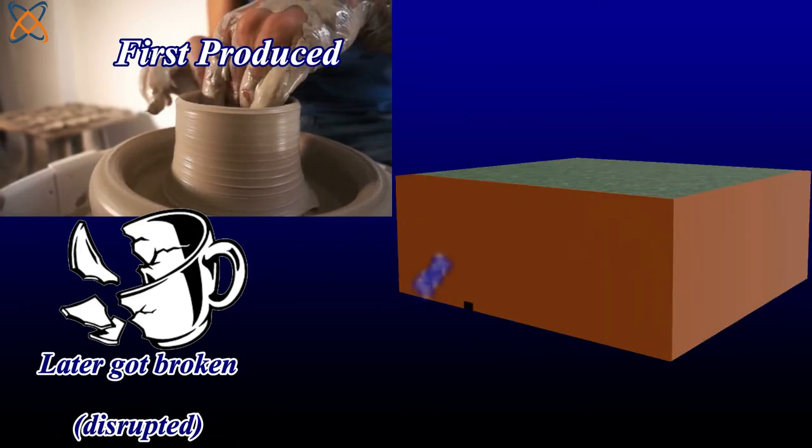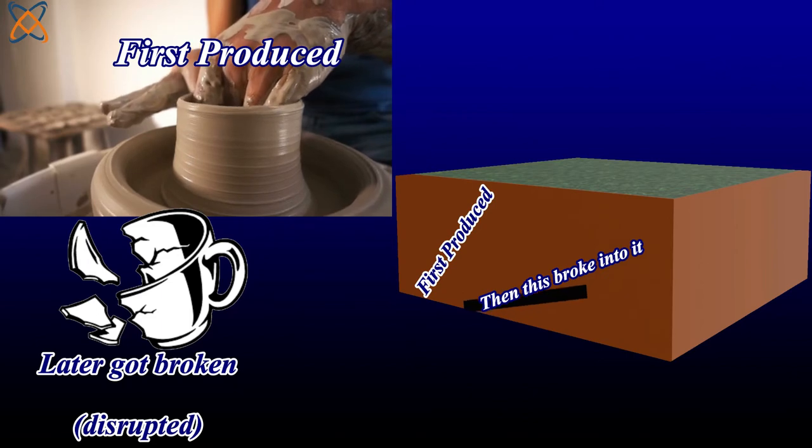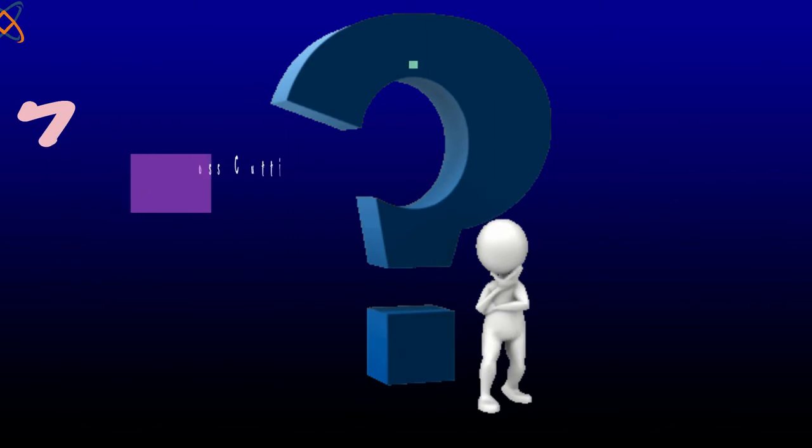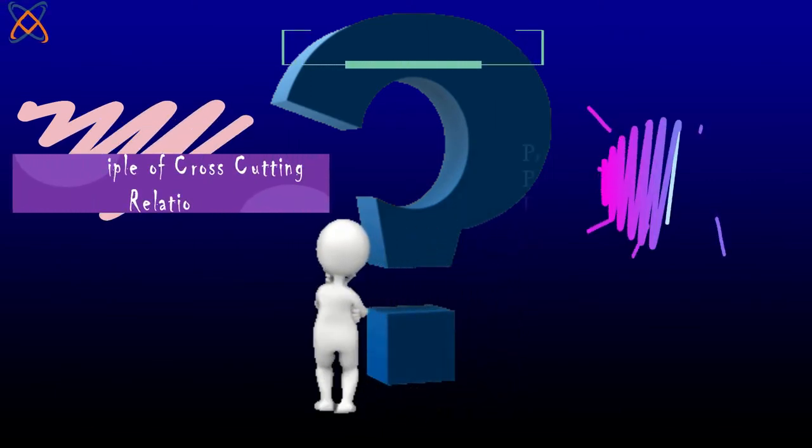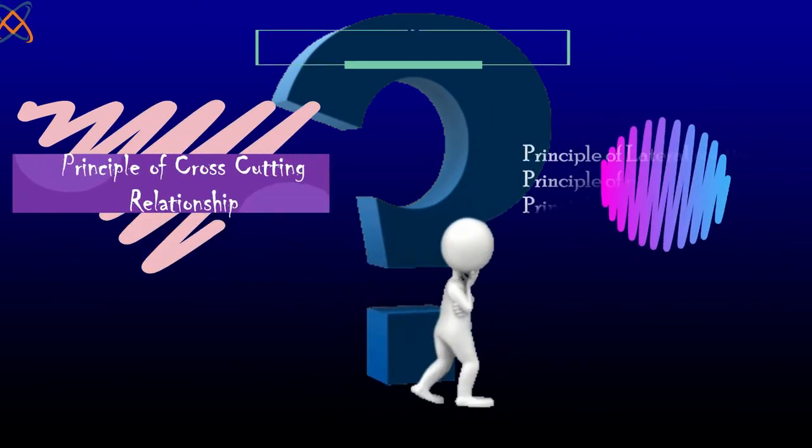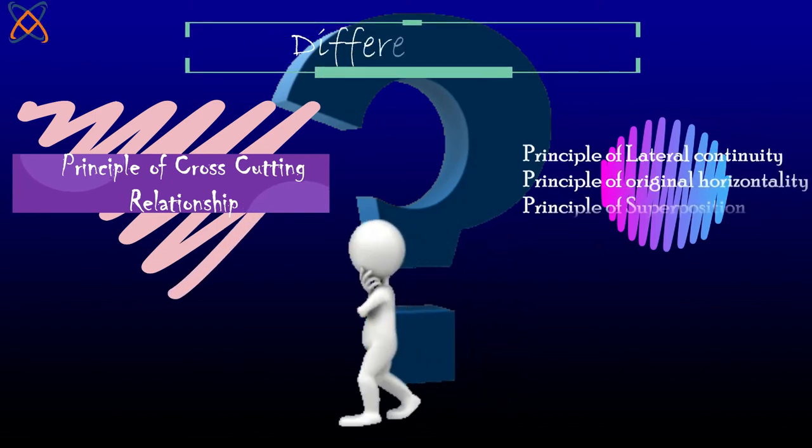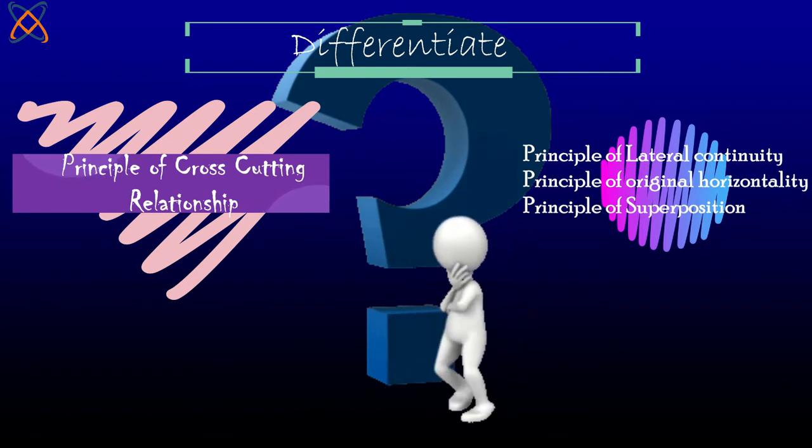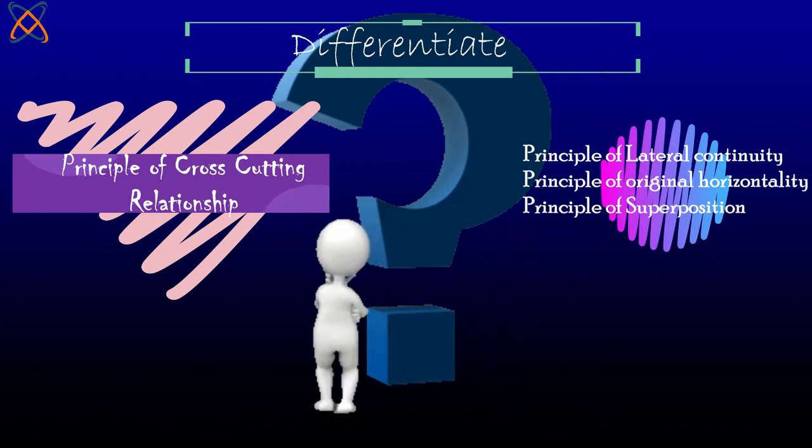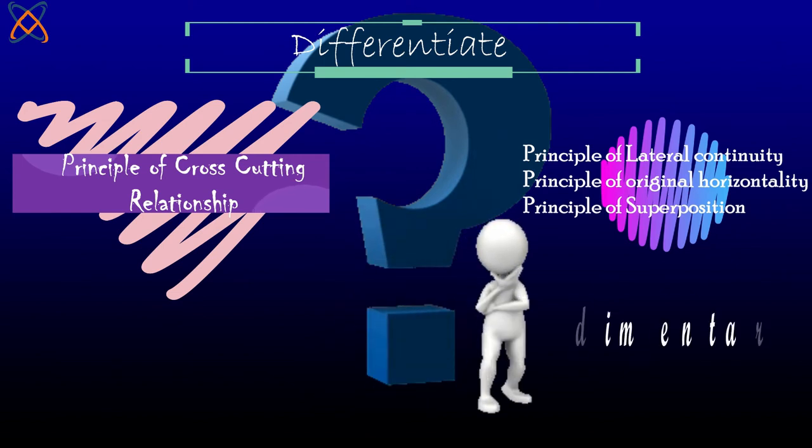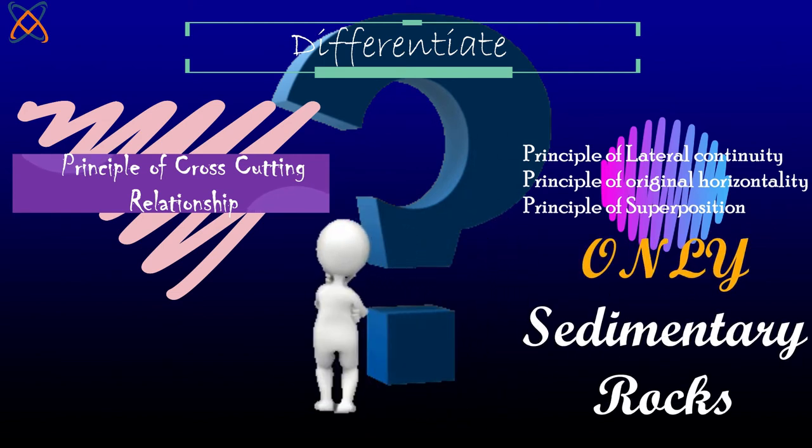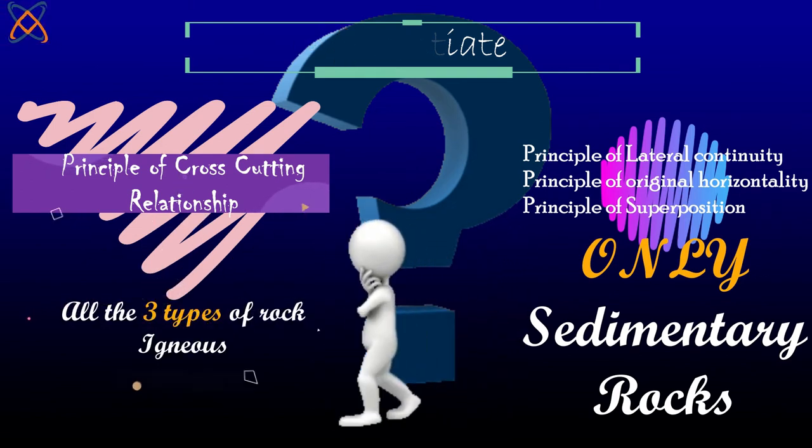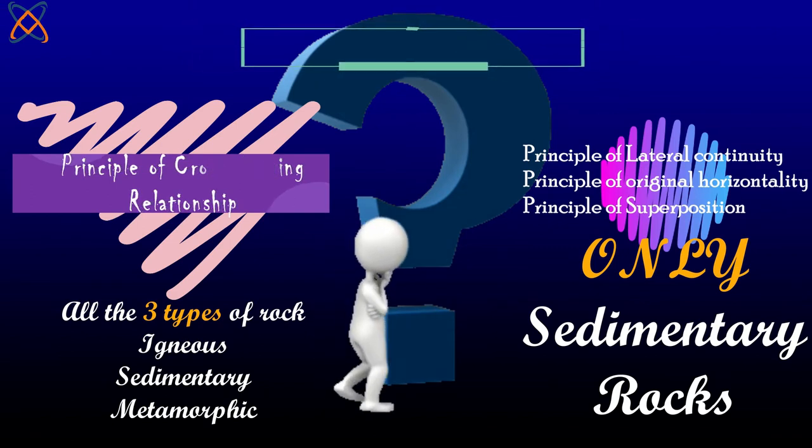So again, the law of cross-cutting relationship states that a destructive structure or rock is older than the cause of destruction. Can I spot a difference between this principle of cross-cutting relationship and three other principles of stratigraphy which we have discussed in some other tutorials? These three principles—superposition, lateral continuity, and original horizontality—are related to only sedimentary rocks, but the principle of cross-cutting relationship is related to all types of rock: igneous, metamorphic, and sedimentary rocks.